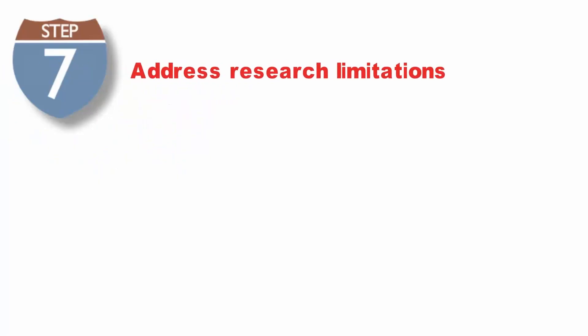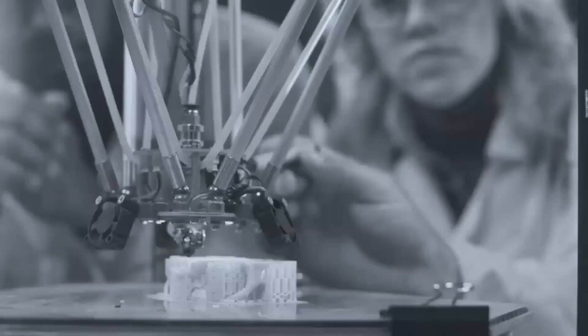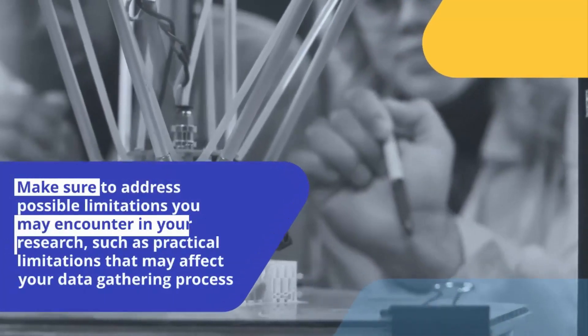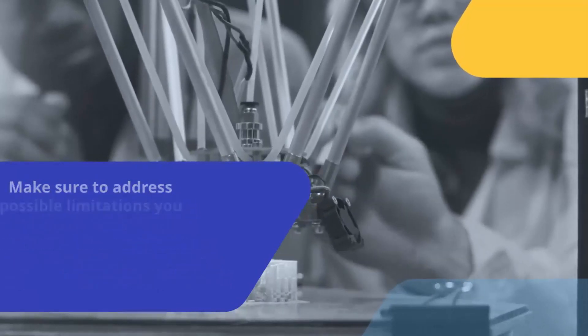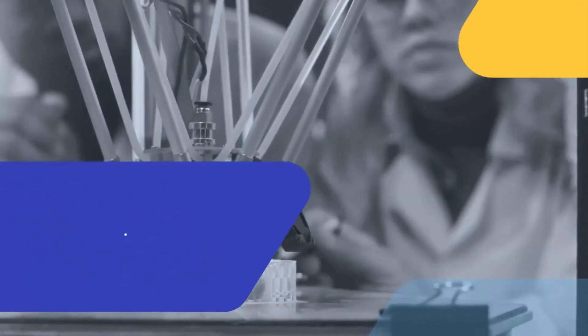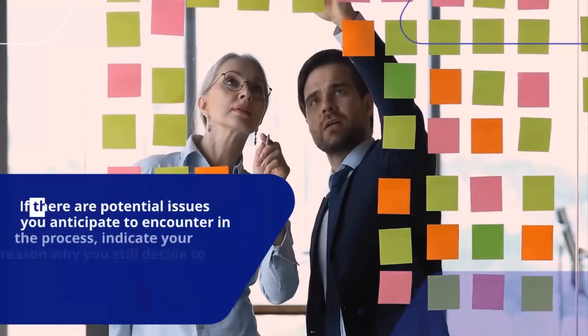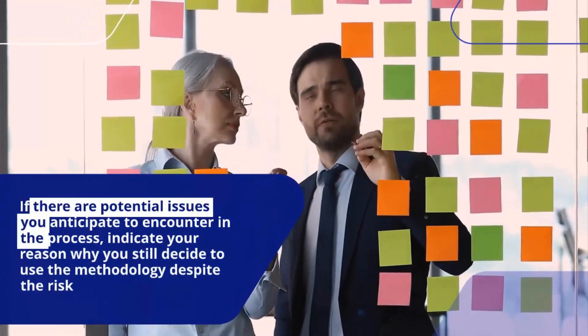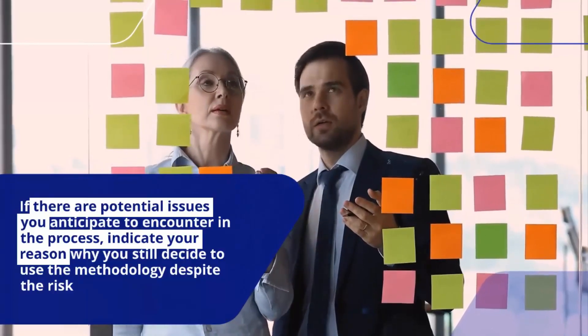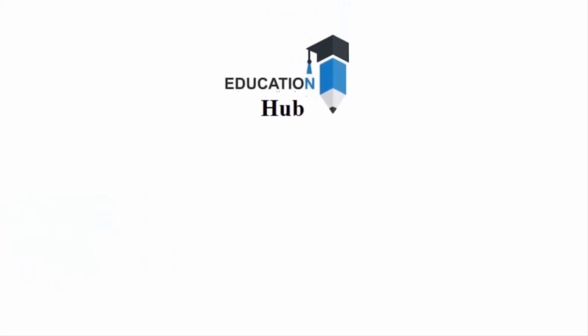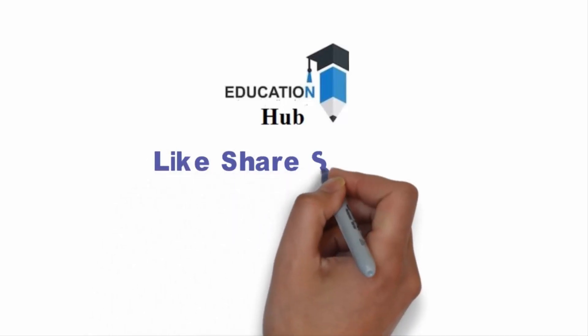Step 7: Address research limitations. Make sure to address possible limitations you may encounter in your research, such as practical limitations that may affect your data gathering process. If there are potential issues you anticipate to encounter in the process, indicate your reason why you still decide to use the methodology despite the risk. Thank you for watching. Like, share and subscribe to my channel for more informative videos about research.